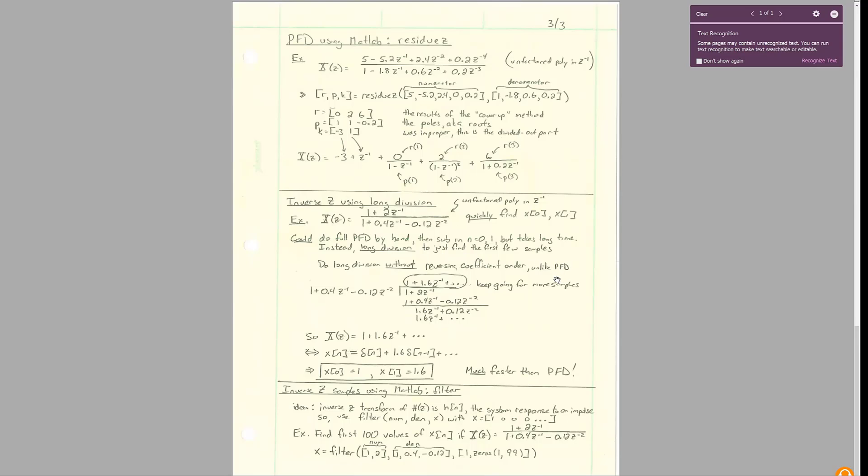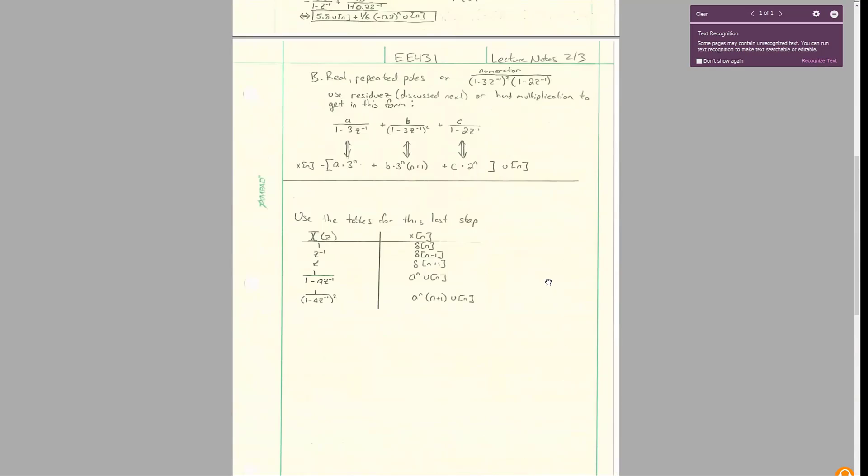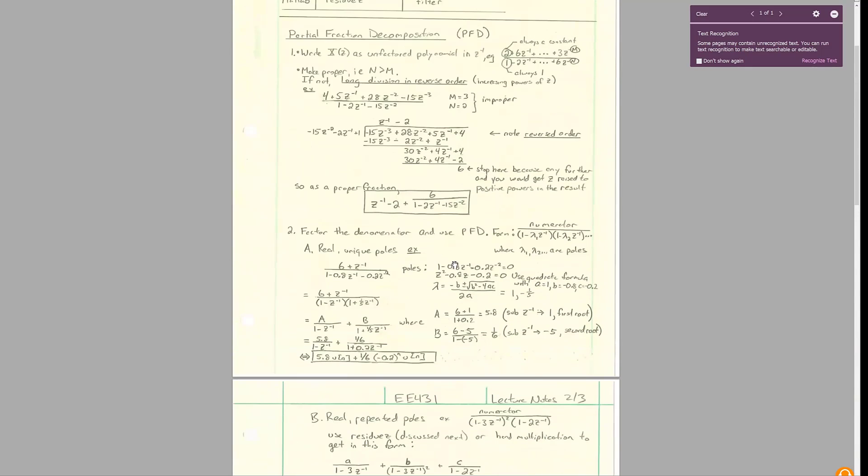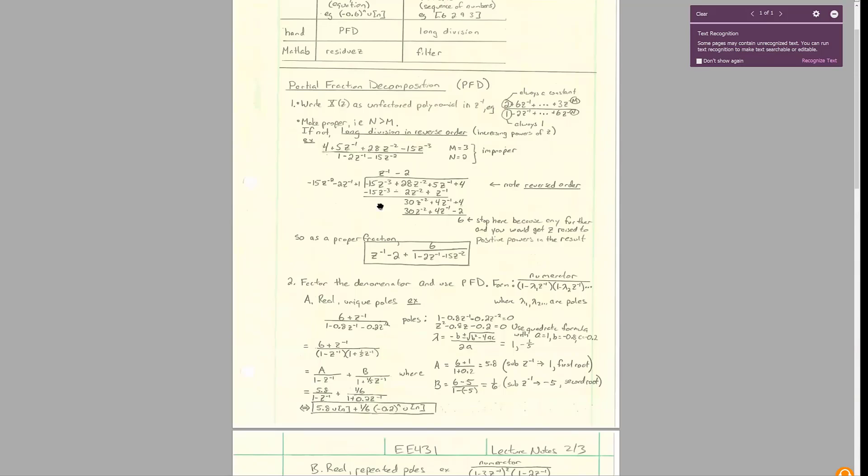You remember for partial fraction decomposition, when making it proper, we reverse the coefficient order to start off with scalars and making it decreasing powers of z, to start off with the greatest power of z to negative something and increasing coefficients of z.